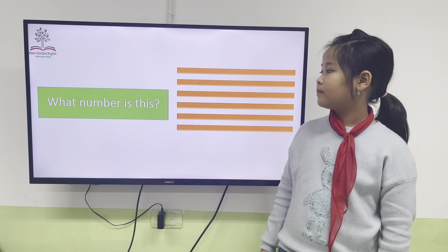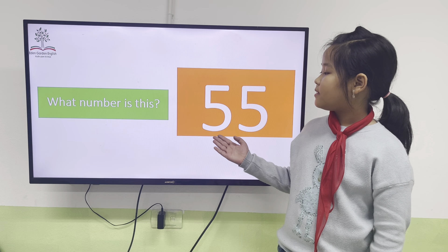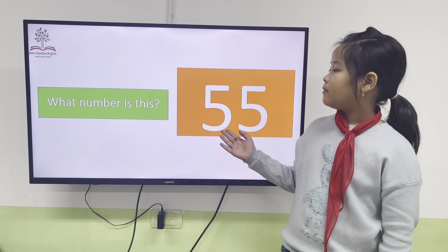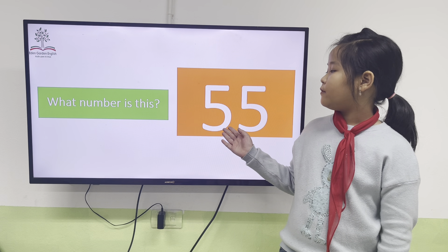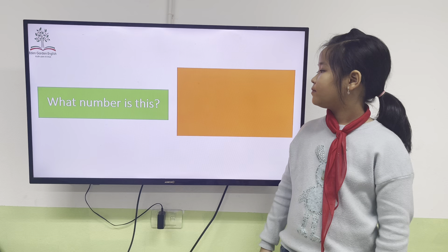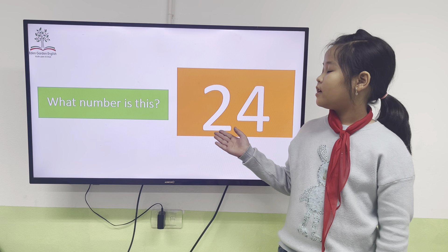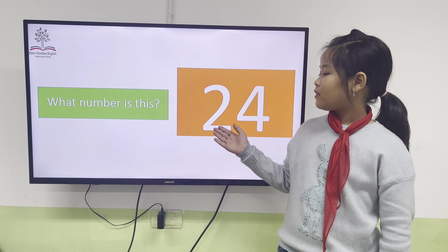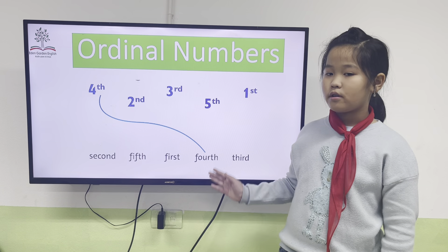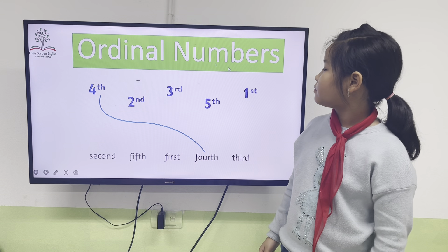All right, another one. This number is 55. This number is 24. Okay, now let's go to ordinal numbers.